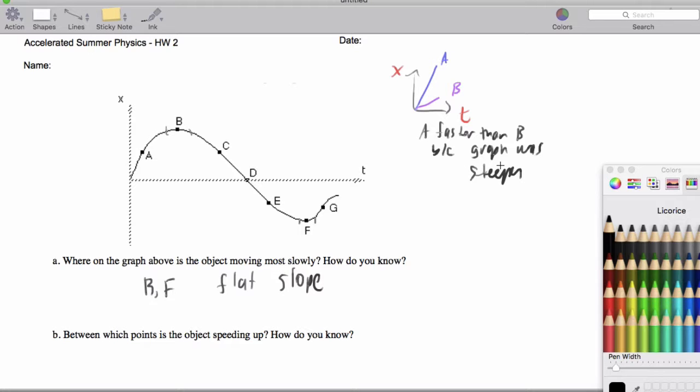And so what that tells us in this problem is that we want to see a flat graph get steeper and steeper. So that tells us between B and C and between F and G because the graph gets steeper.